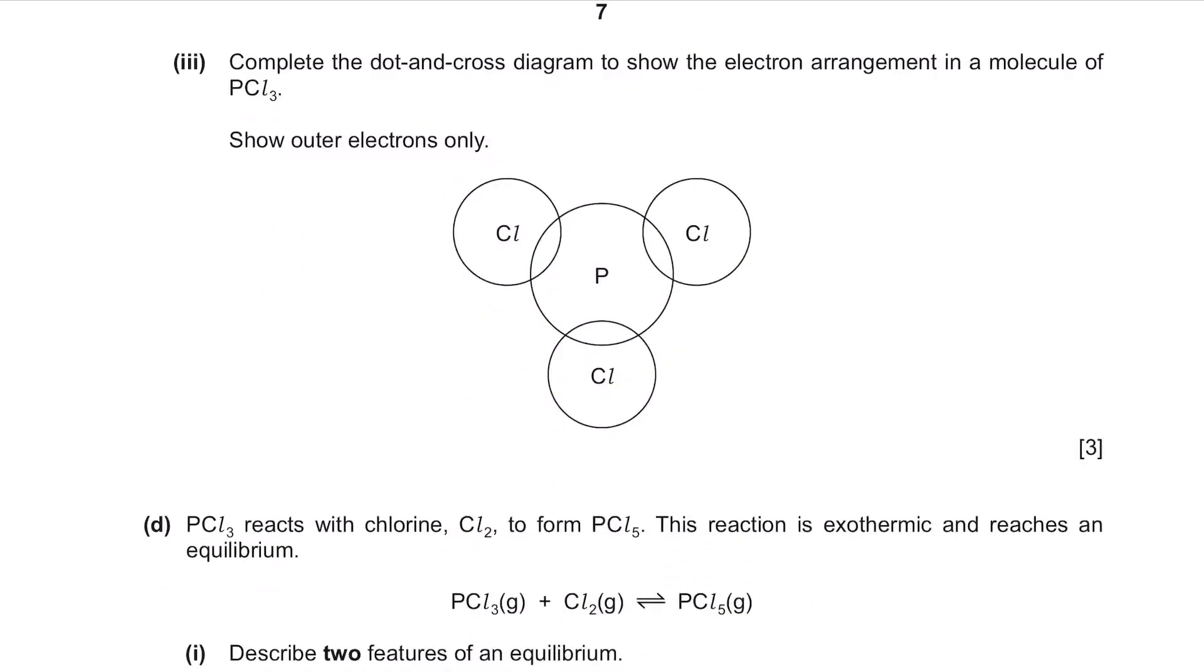Complete the dot and cross diagram to show the electron arrangement in a molecule of PCl3. So the number of outer electrons for phosphorus P is 5. And the number of outer electrons for Cl is 7. And both of them need to have 8 outer electrons in total in order to form a proper compound of PCl3.